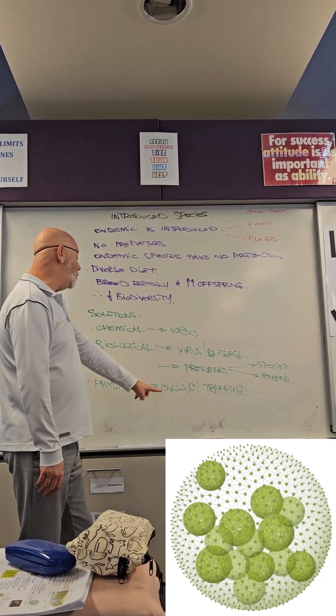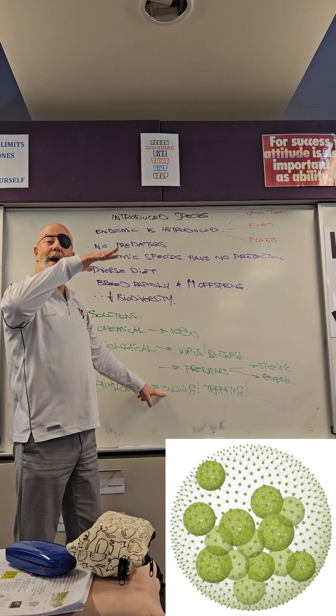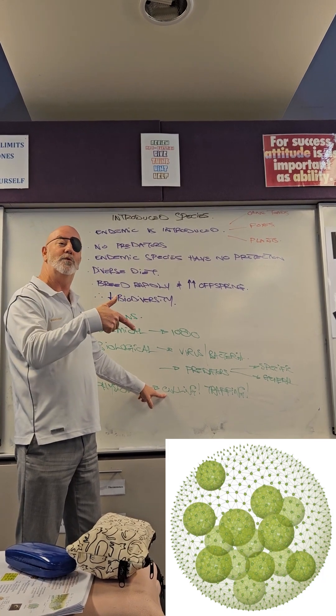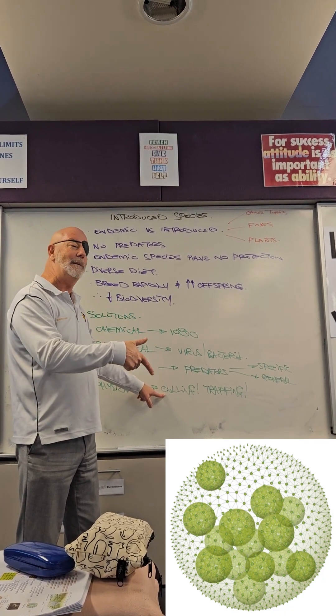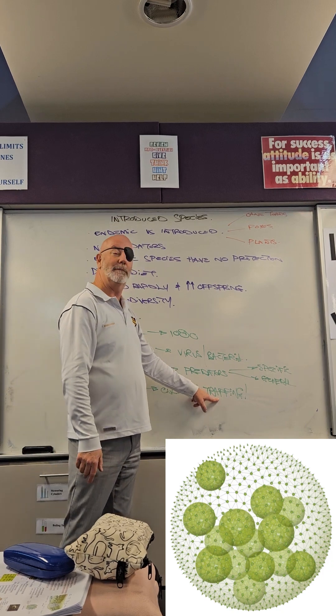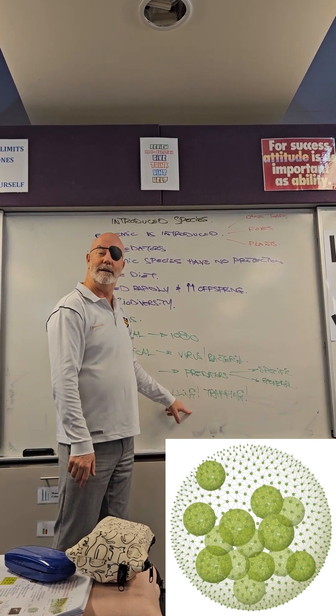And the last one is physical control which involves culling like flying around in a helicopter and shooting kangaroos or wild horses or camels or you can use trapping. But either way, death is the only answer.